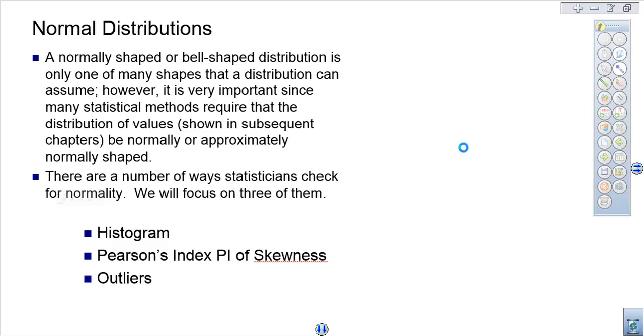And those three different methods are histogram, a thing called Pearson's index of skewness, or outliers. The deal is this: a normally shaped or bell-shaped distribution is only one of many shapes that a distribution can assume. We got left skewed, right skewed, normal, bimodal, and so forth. But normal is the one that we really care about.